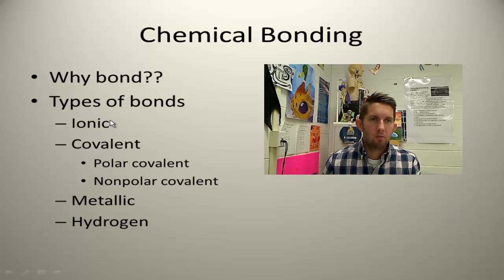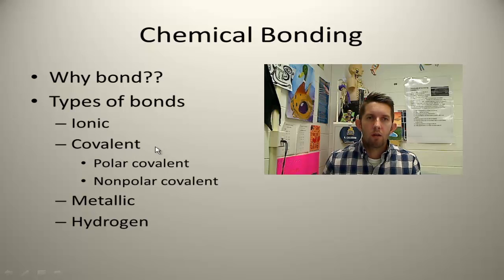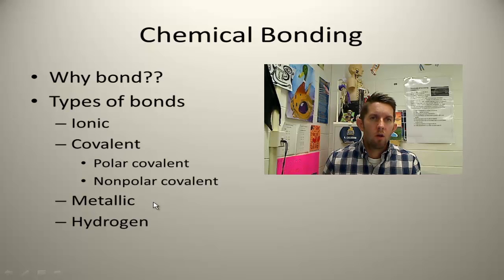Types of bonds: ionic bonds, covalent bonds — which we break into polar versus non-polar — metallic bonds, and hydrogen bonds. Let's break these down one at a time.